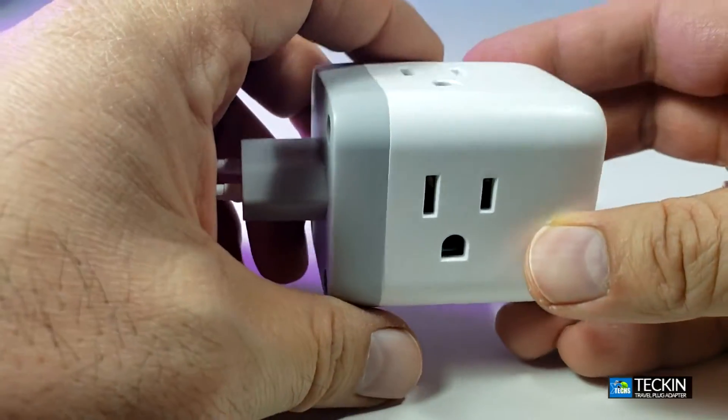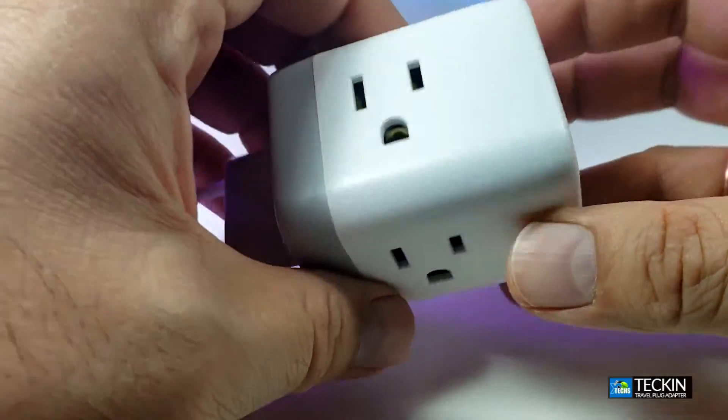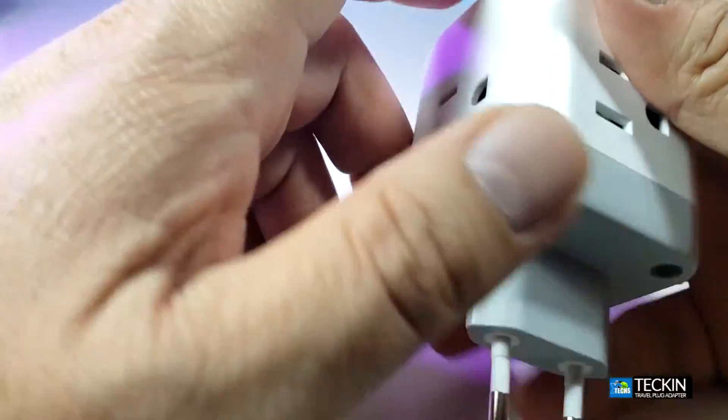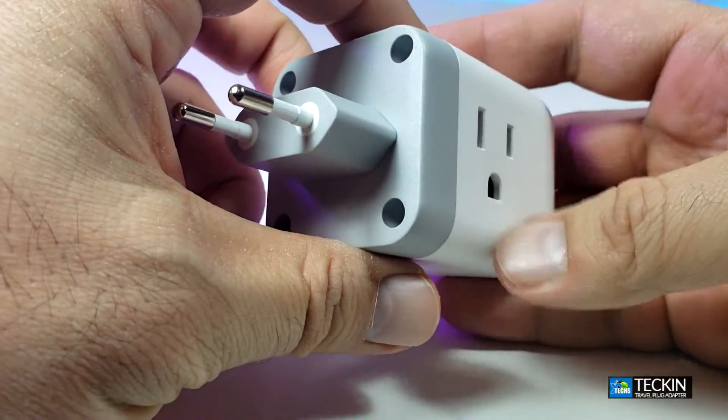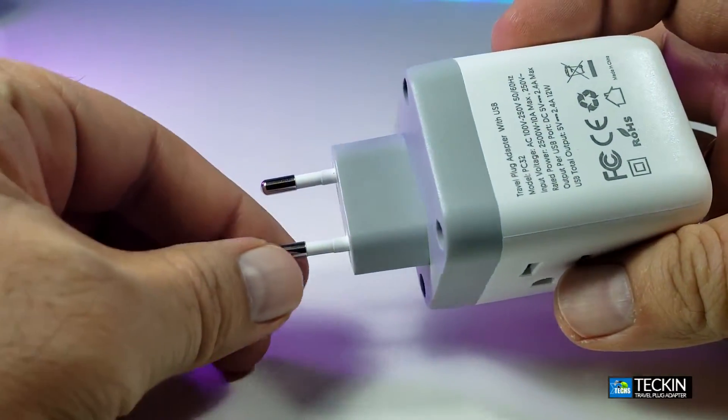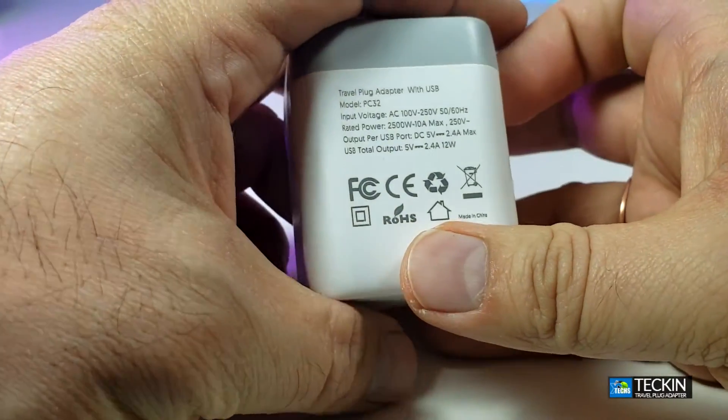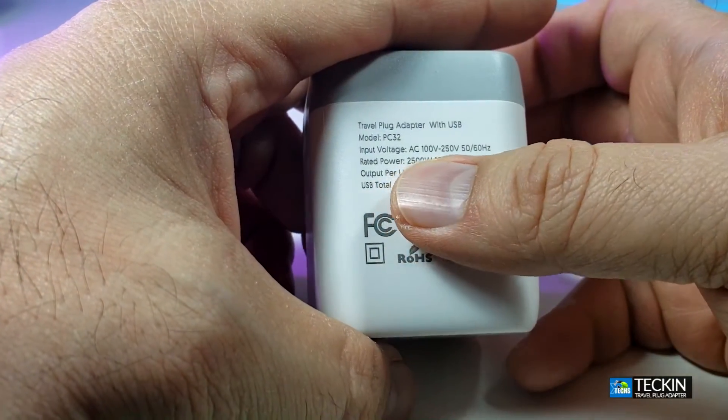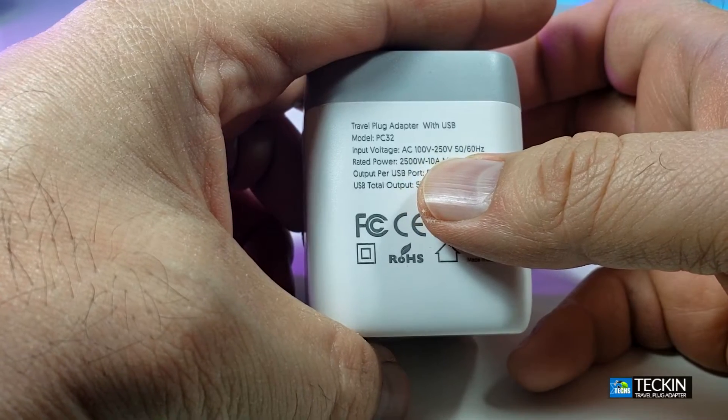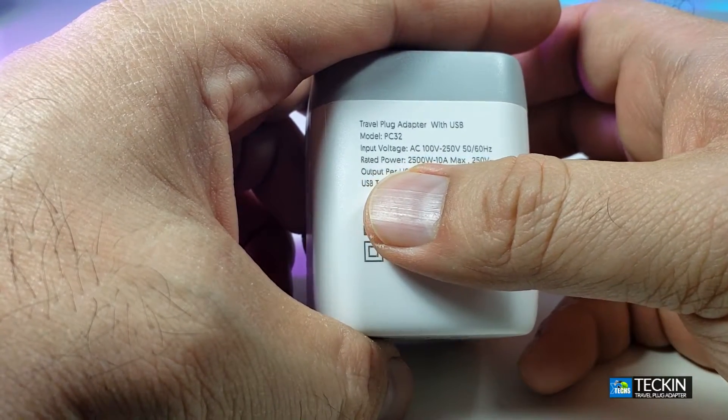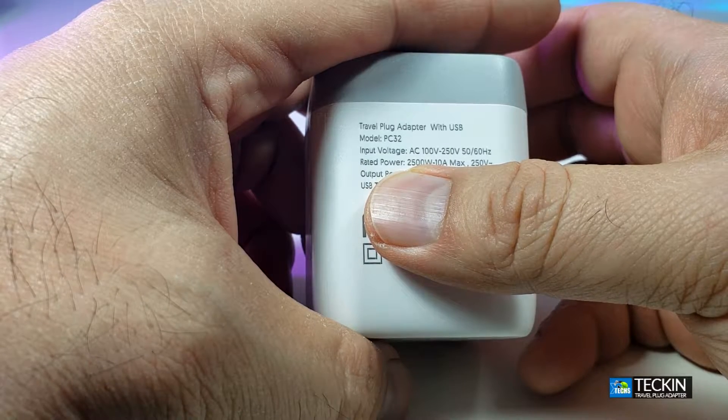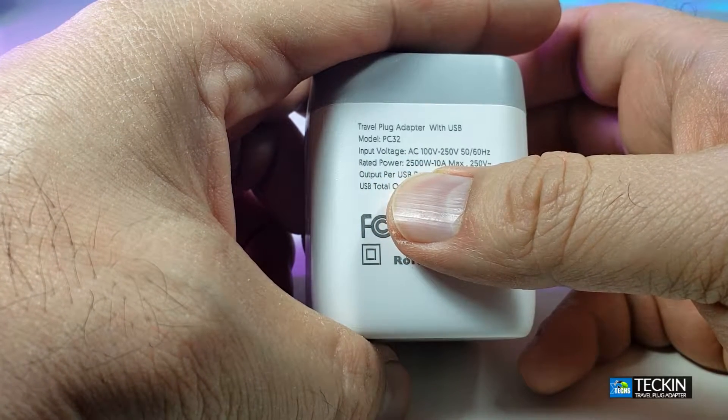Now, the socket itself looks really cool, so it has three sides. Starting from this side, you can see that it's upside down, so let's go this way. This part is created so you can take this with you overseas, and if you look on the top, it does have 100 volt to 250 volt, which is running between 50 to 60 hertz, and then going in the rated power, it takes up to 2500 watts with a 10 amp maximum.